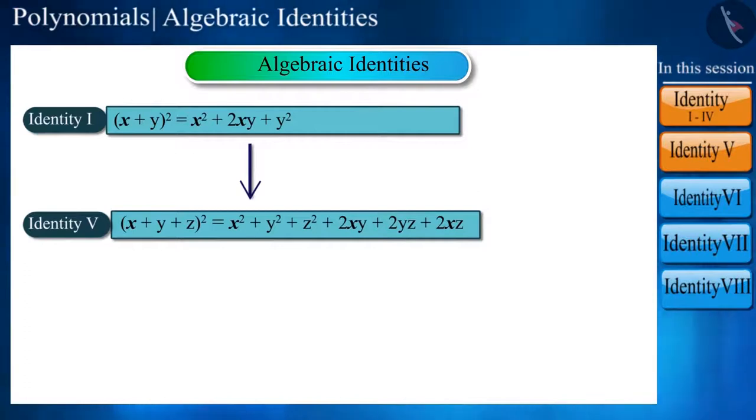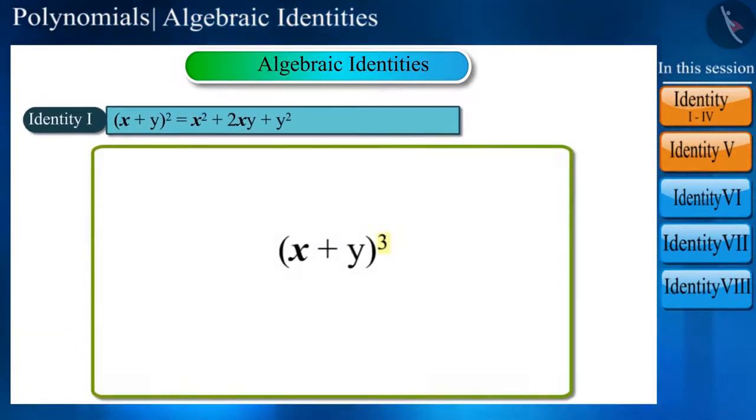Just like we learned how to derive the identity of the square of a trinomial from the square of a binomial, we will now learn to derive the identity of a cubic polynomial from a quadratic polynomial. So let's compute (x + y)³.